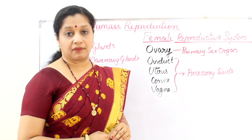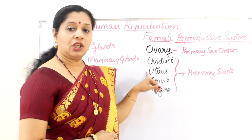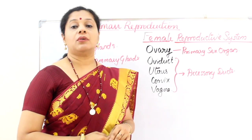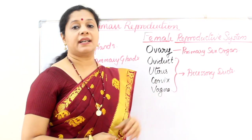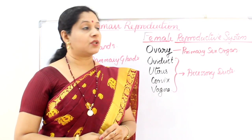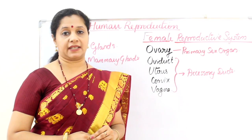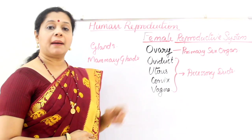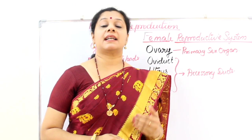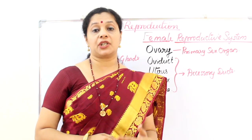The other parts of the human female reproductive system are a pair of oviducts or fallopian tubes, then the uterus or womb, the cervix which is the neck of the uterus, and the vagina. These parts are collectively called accessory ducts. Apart from these, a few glands are also associated, including the mammary glands, which are a characteristic feature of human females. Well-developed mammary glands become functional only after the delivery of the baby and serve as an accessory organ for nourishing the young one.